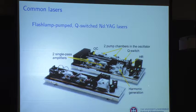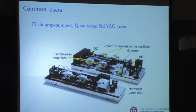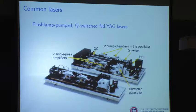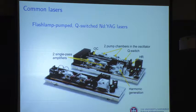Here's what's inside one of those YAG lasers: the high reflector, the Q-switch, two pump chambers, output coupler — that's the oscillator. There are two single-pass amplifiers to build up more gain, and then there's a box with crystals for switching wavelengths. This design is almost identical to the design in the laser that produced the first PLIF picture in 1982. It's a really robust design.